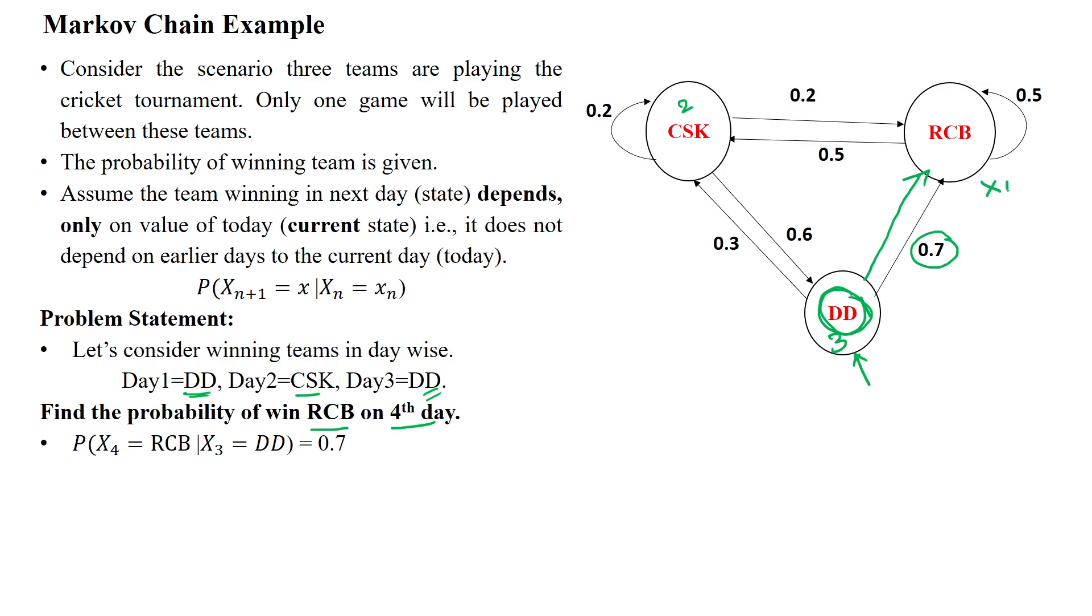Now probability of X4 given X3. That is the meaning of the next state is given current state. Now the value is, probability of this value is 0.7. The probability of winning RCB on fourth day is 70 percentage possibility.